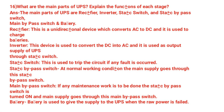What are the main parts of UPS? Explain the functions of each. The main parts of UPS are: Rectifier, Inverter, Battery, and Converter. The Rectifier converts AC to DC. The Inverter converts DC to AC. The Static Switch trips the circuit if any fault occurs. The Bypass Switch activates under abnormal working conditions when main supply is lost. The battery supplies power to the UPS.